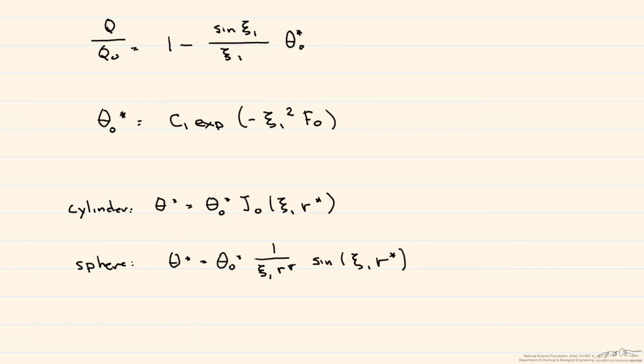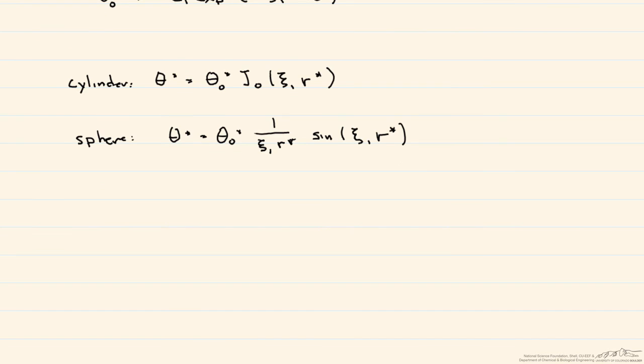So the integrations produce the following expressions for these geometries. So the first one is our cylinder, q over q0 is equal to 1 minus 2 times this theta zero star divided by the eigenvalue times the Bessel function, again, of the first kind of the eigenvalue.